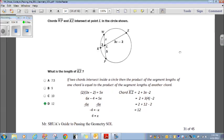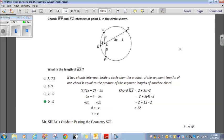Chords WP and KZ intersect at point L in the circle shown. Okay. Right there. Chord KZ WP intersecting point L. What is the length of KZ? Okay. So, you should remember from your study of circles that if two chords intersect inside a circle, then the product of the segment lengths of one chord is equal to the product of the segment lengths of another chord. Or, basically, what this is saying is, since we have two chords intersected inside the circle, 2 times 3X minus 2 is equal to 5 times X. That's what it's saying, which is what I said up here. 2 times 3X minus 2 equals 5X.